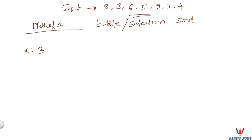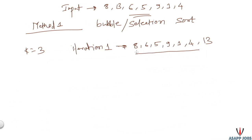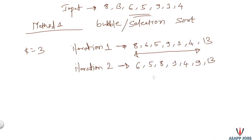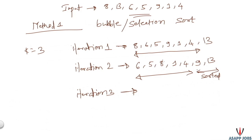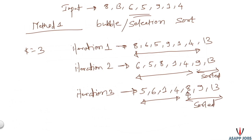Let's understand this with an example. The input sequence is given and k equals 3. Using bubble sort, to get the third largest element we iterate three times. After iteration one, the maximum element 13 reaches the last position. After iteration two, the maximum of the remaining unsorted group is 9, so 9 reaches the last position of the unsorted group. After iteration three, the maximum of the unsorted group is 8, so 8 shifts to the sorted group — 8 is the third largest element.